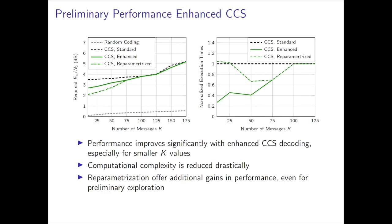On this graph, we explore the benefits of dynamic column pruning. On the left graph, the x-axis represents the number of messages, or the sparsity of s, and the y-axis is a measure of performance in the form of the minimum Eb over N0 to achieve the desired probability of error. The top curve is the performance of the original compressed sensing scheme. The solid green line is the same scheme, but with the enhanced decoding technique. And the third line is a reparameterized system.